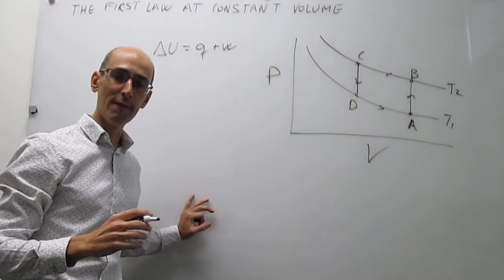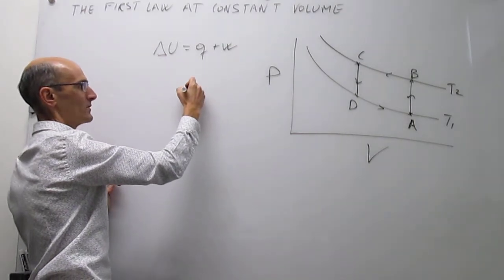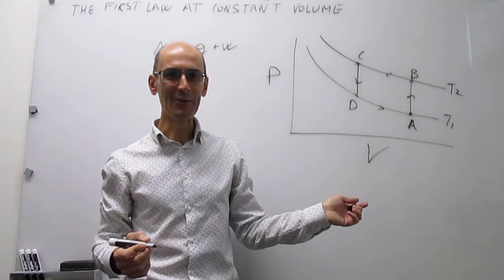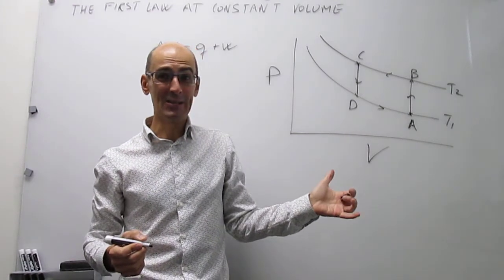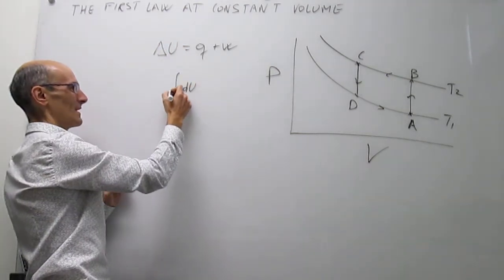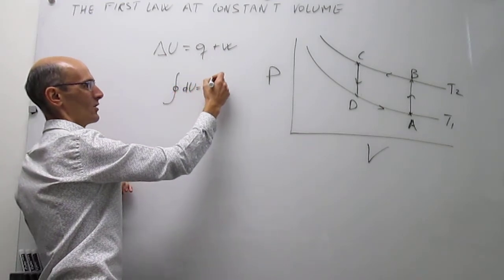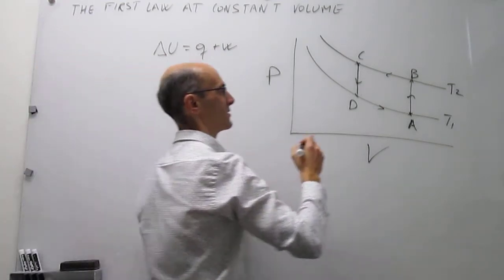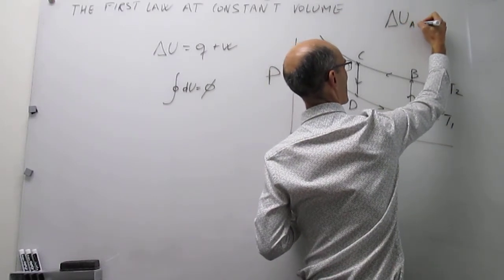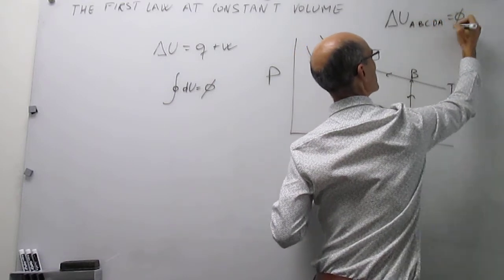So there are four steps in the cycle: heating, isothermal compression, cooling, and isothermal expansion. For the state function — the internal energy — the initial point and the final point in the cycle are the same, so there is actually no change at all in the state function. A way to write that is that the change in internal energy in a cycle is always zero. So the change in internal energy going from A to B to C to D back to A is equal to zero.